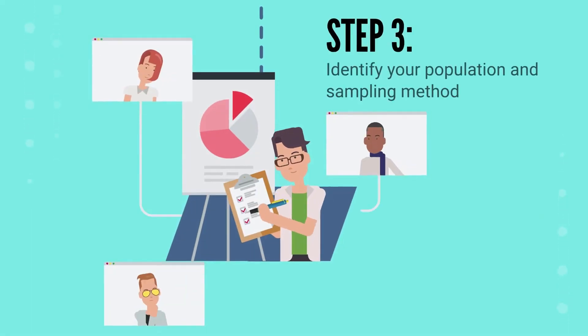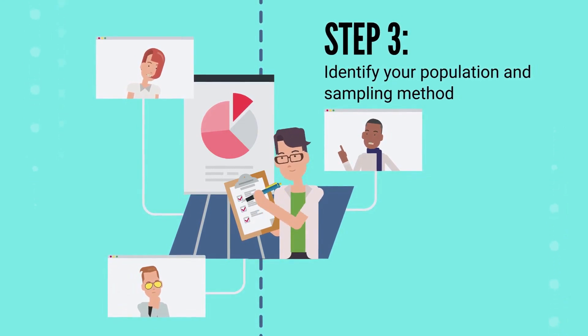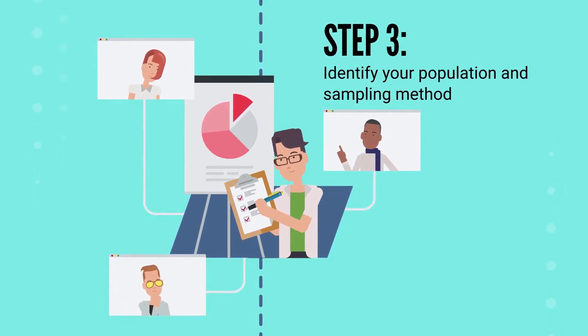Step 3: Identify your population and sampling method. In this step, you will define who will participate in your research.